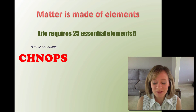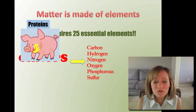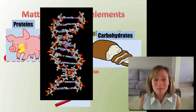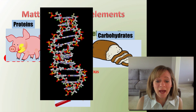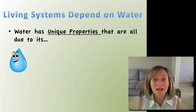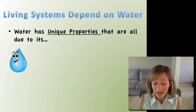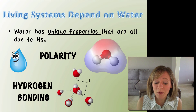I call them CHENOPS — carbon, hydrogen, nitrogen, oxygen, phosphorus, and sulfur. These are the six most abundant elements in living systems. We find them in proteins, carbohydrates, fats, lipids, and especially in our DNA. Hydrogen and oxygen make up water, which is also matter, and water has some pretty unique properties we're going to investigate. All of its unique properties are due to two things: its polarity and its hydrogen bonding.